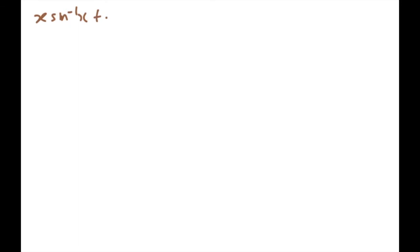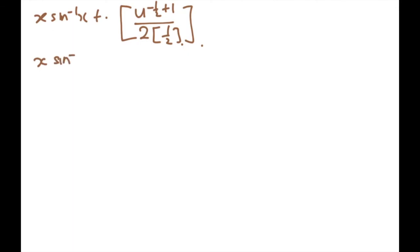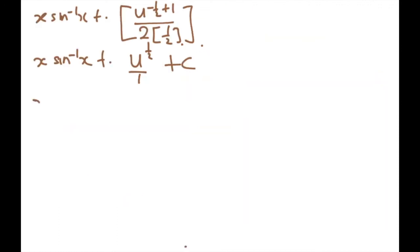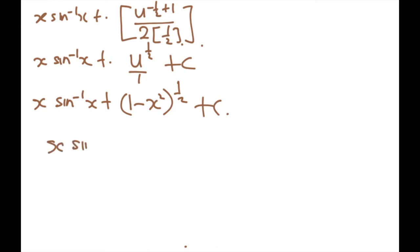Integrating u to the negative half: raise the power by one to get u to the half, and divide by the new power half — so two times a half gives one. The final answer is x inverse sine x plus u to the power of half plus c. Substituting back u equals 1 minus x squared, everything must be in terms of x. So the final answer is x arcsin x + √(1 - x²) + c.